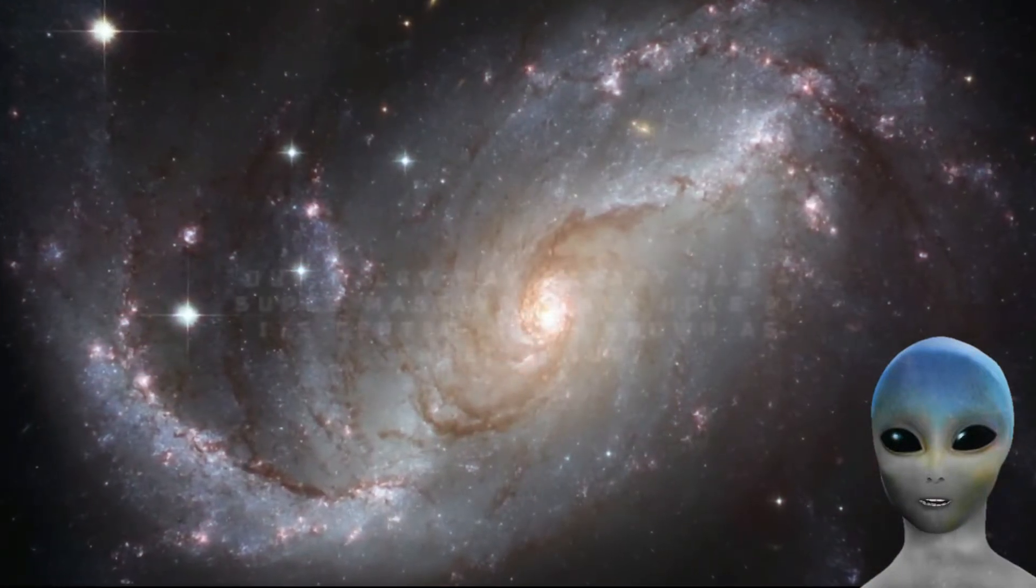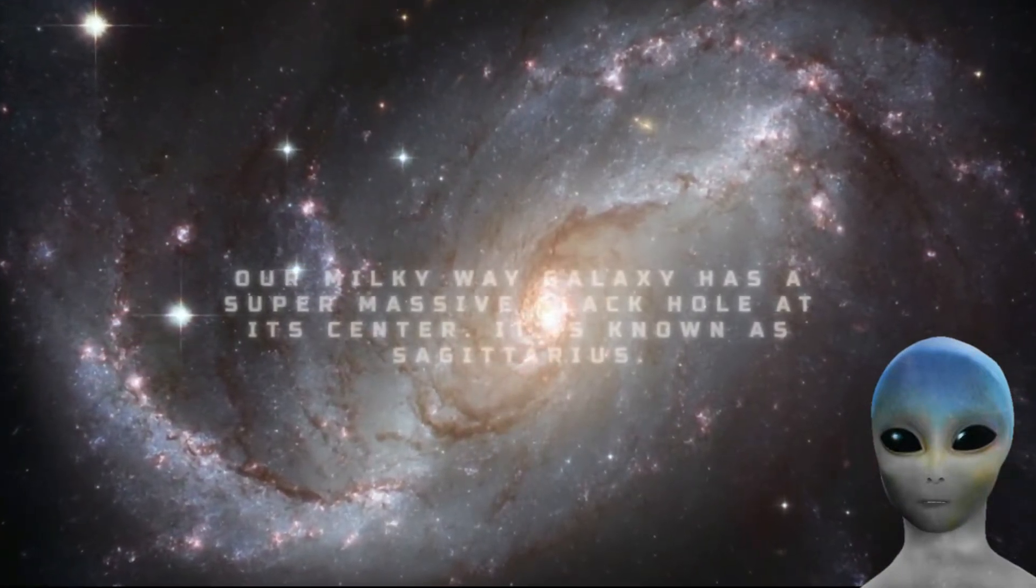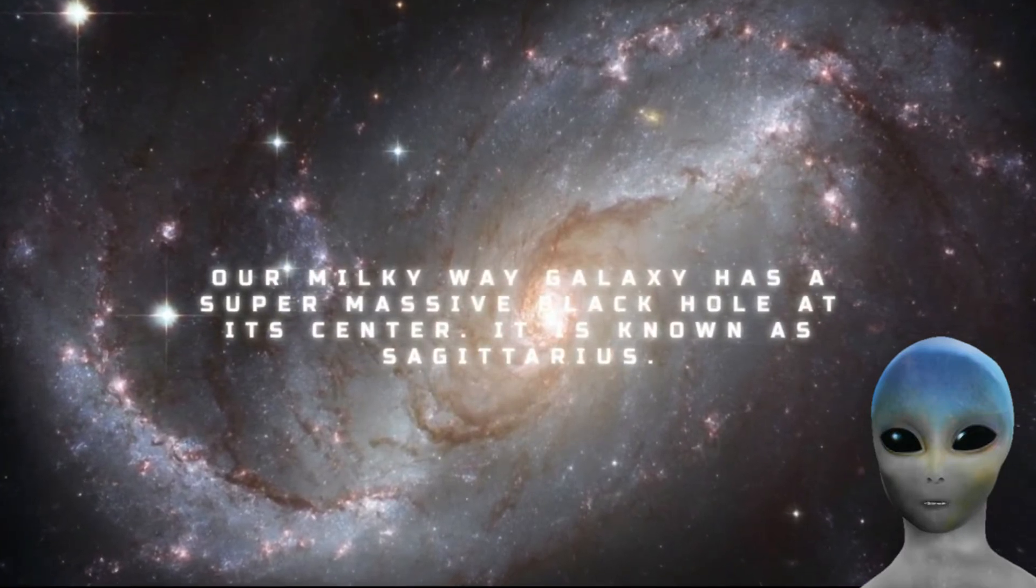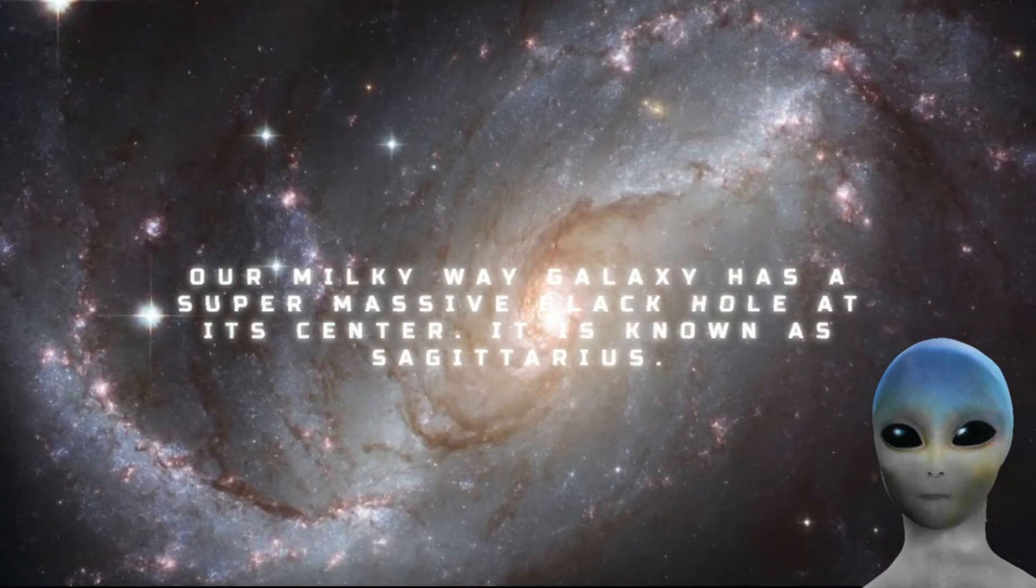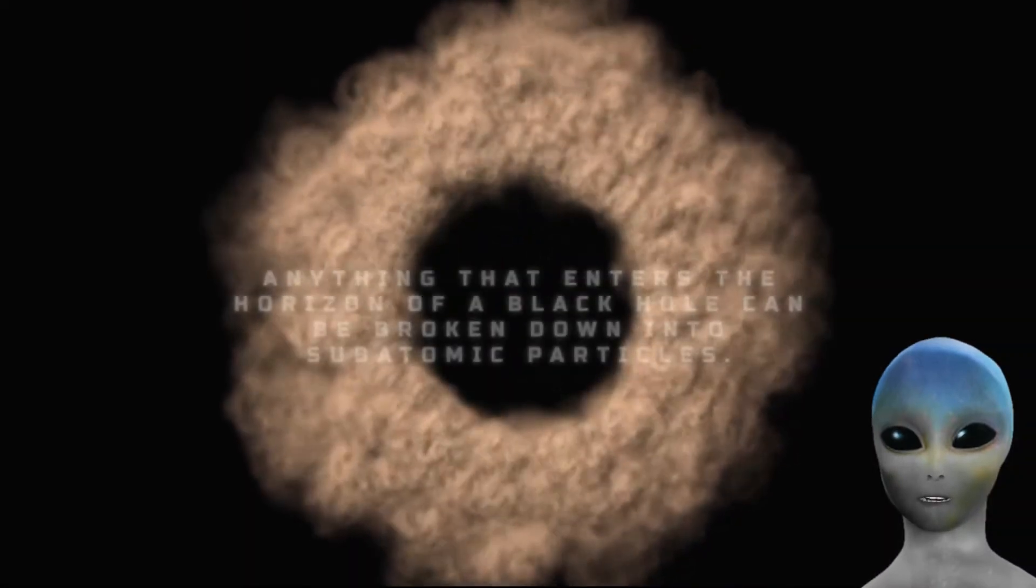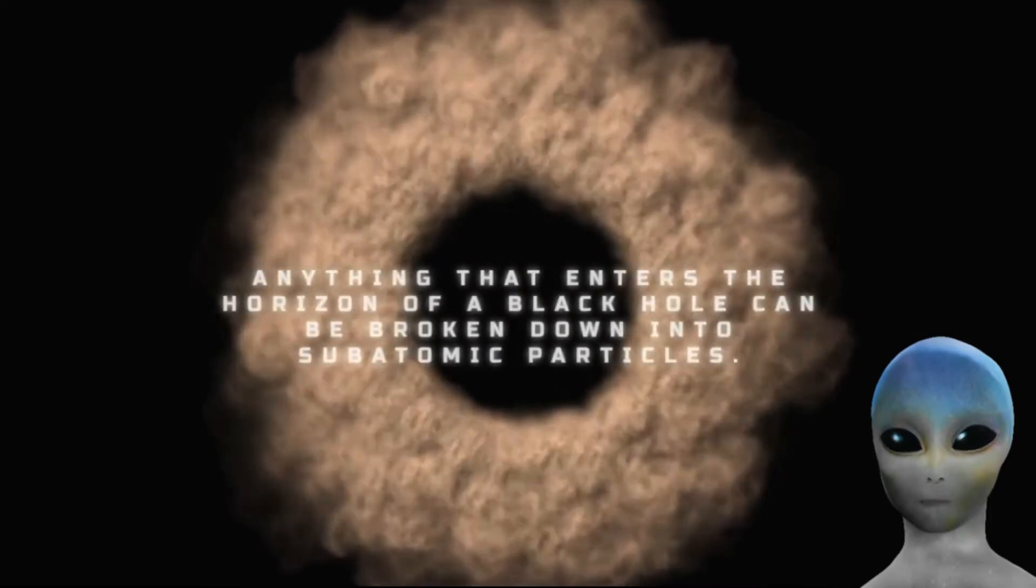A similar thing may occur if a star passes too close to a black hole. In such a way, the black hole can tear the star apart because it pulls it toward itself. As the attracted matter heats up and accelerates, it will emit X-rays radiating into space.